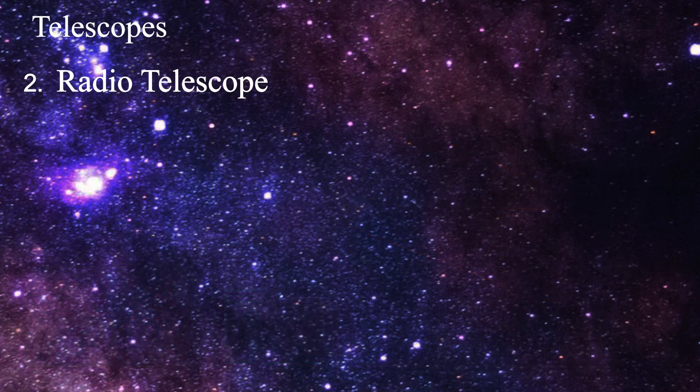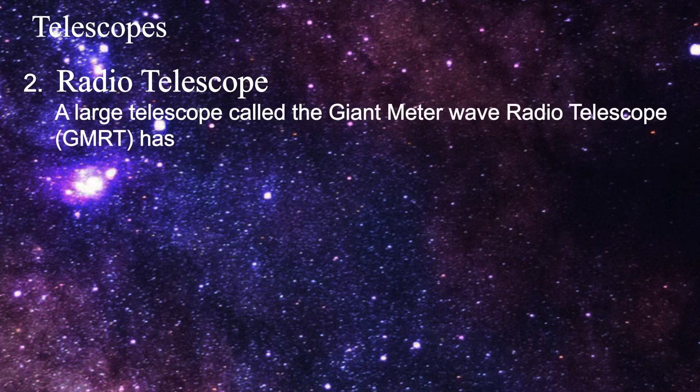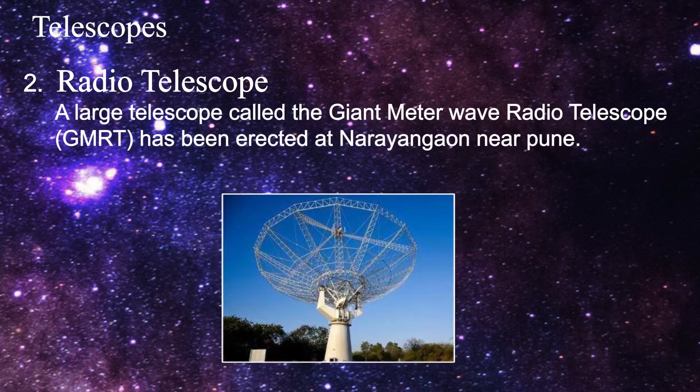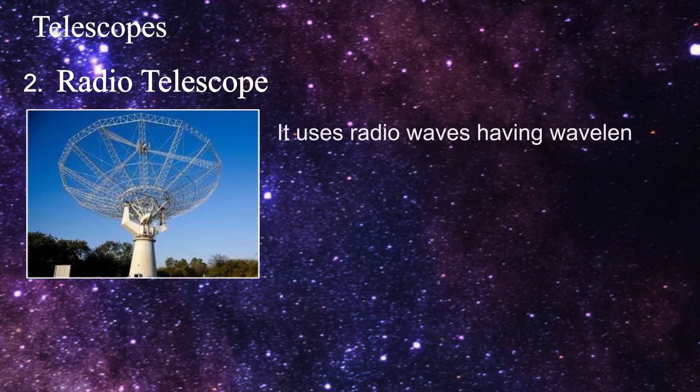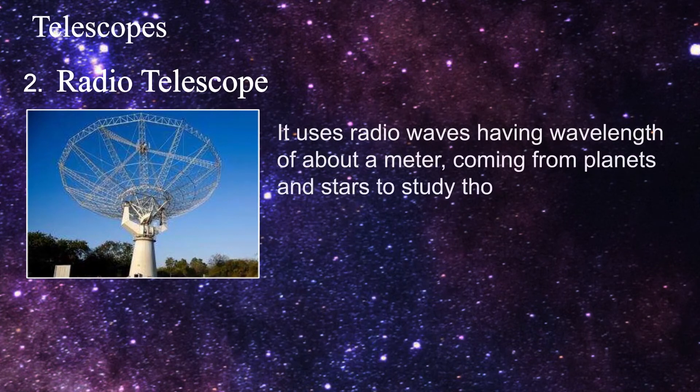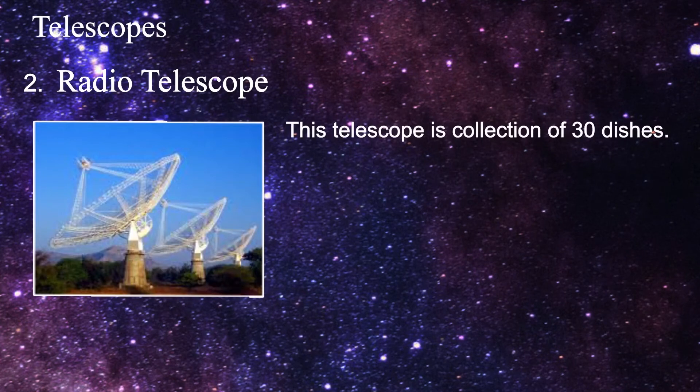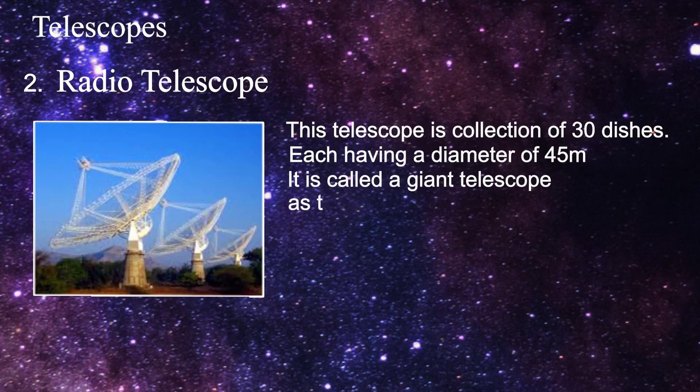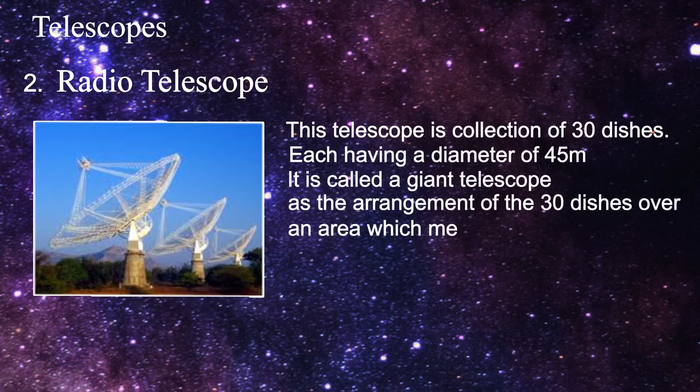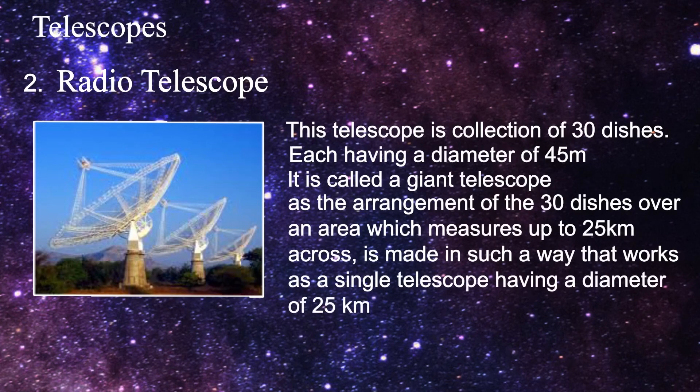The information gathered by this receiver is passed on to a computer which analyzes it and constructs an image of the source. A large radio telescope called the Giant Meter Wave Radio Telescope, that is GMRT, has been erected at Narayangaon near Pune. It uses radio waves having wavelengths of about a meter coming from planets and stars to study those heavenly bodies. This telescope is actually a collection of 30 dishes each having a diameter of 45 meter. It is called a giant telescope as the arrangement of 30 dishes over an area which measures up to 25 kilometer across is made in such a way that it works as a single dish having a diameter of 25 kilometer.